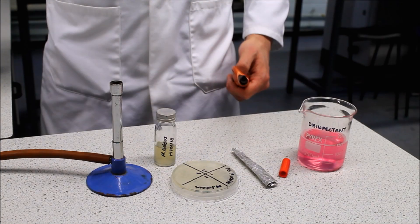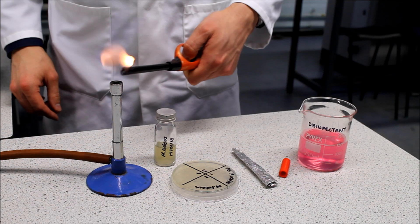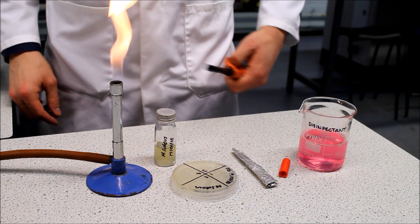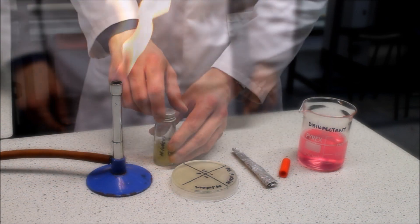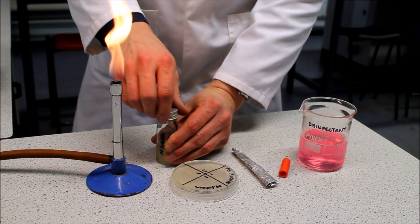Light the Bunsen burner and work close to it from now on as the hot air currents carry microorganisms up and away from the plate. Loosen the lid on the bacterial culture but do not open it yet.